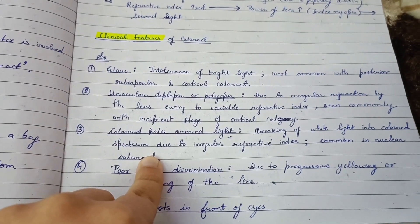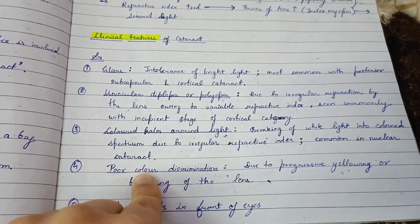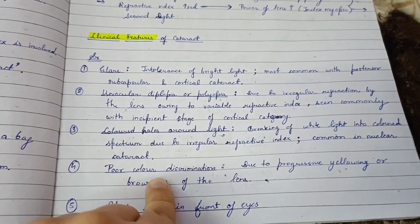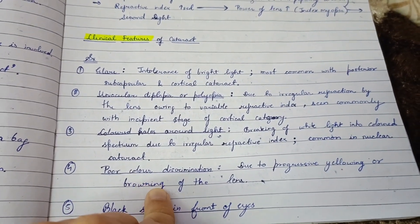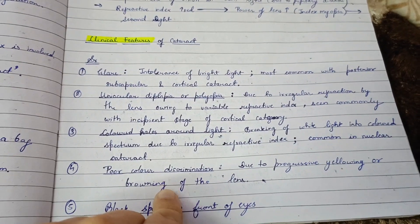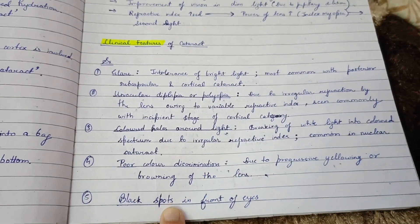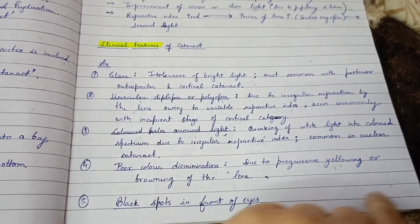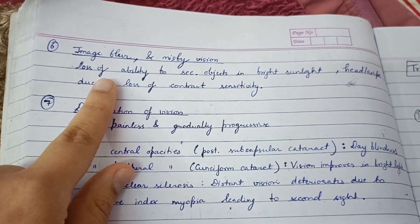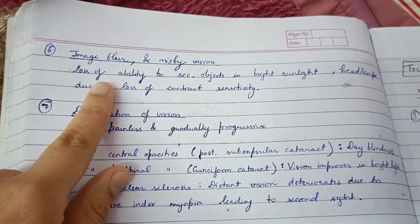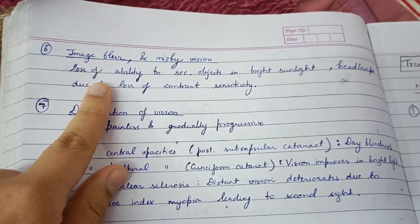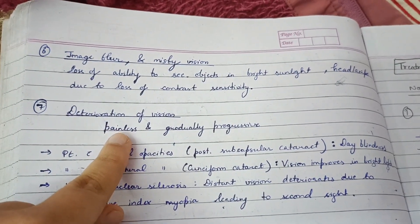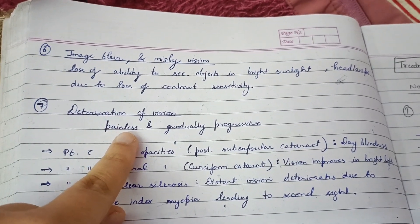Colored halos refer to the breaking of white light into a colored spectrum due to irregular refractive index. Poor color discrimination is seen due to progressive yellowing or browning of the lens. Black spots are seen in front of the eye. Blurred and misty vision is seen, leading to loss of ability to see objects in bright sunlight. Distortion of vision is painless and gradually progressive.